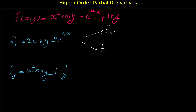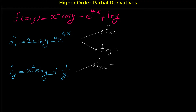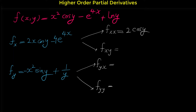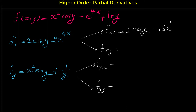From here we can find the second partial derivatives: f sub xx, f sub xy — which are almost always the same — and f sub yy. For f sub xx, the derivative of 2x cosine y with respect to x is 2 cosine y — the derivative of 2x is 2, multiplied by cosine y. Minus the derivative of 4e to the 4x with respect to x again, which equals 16e to the power of 4x.